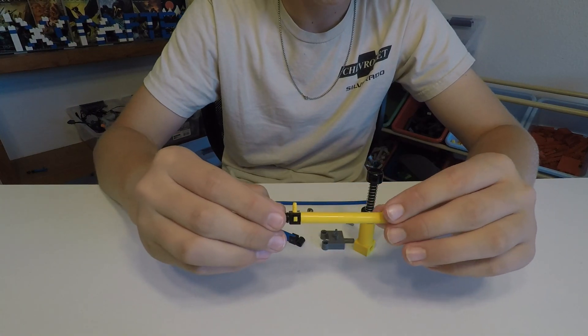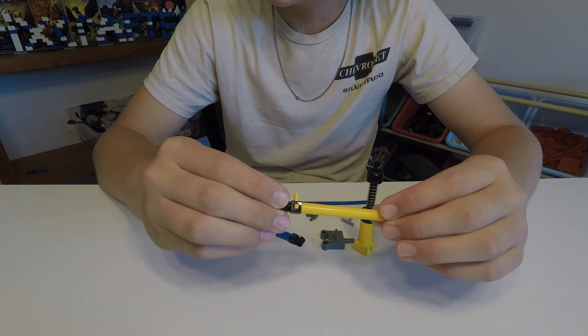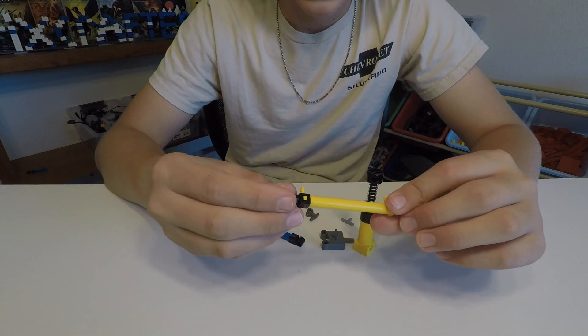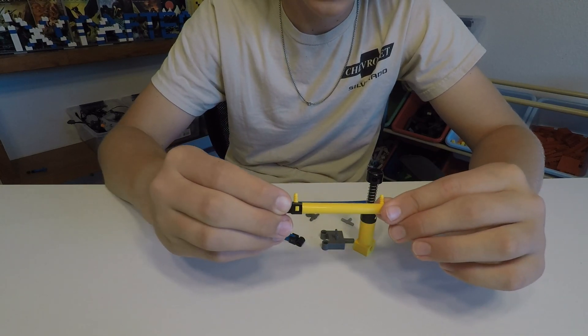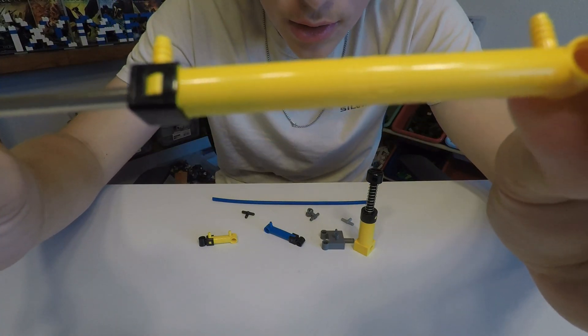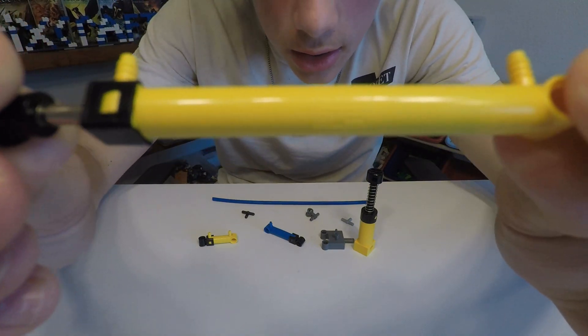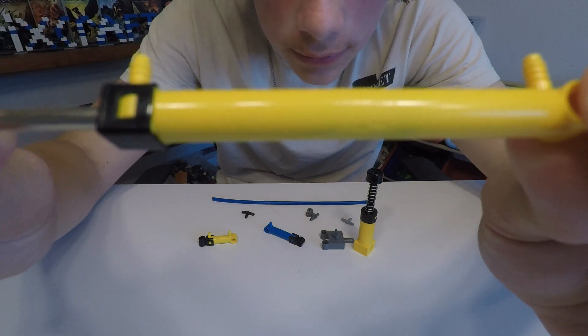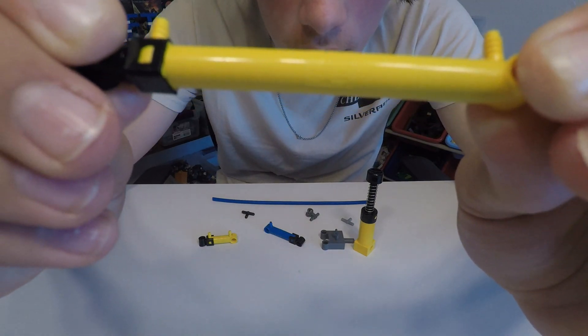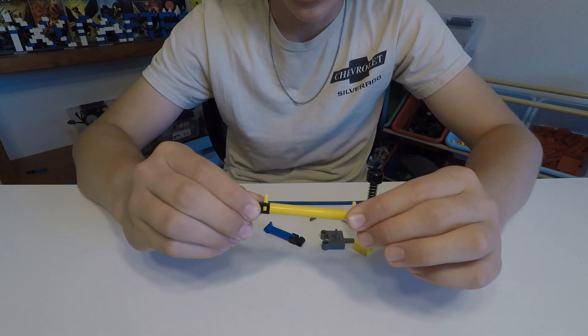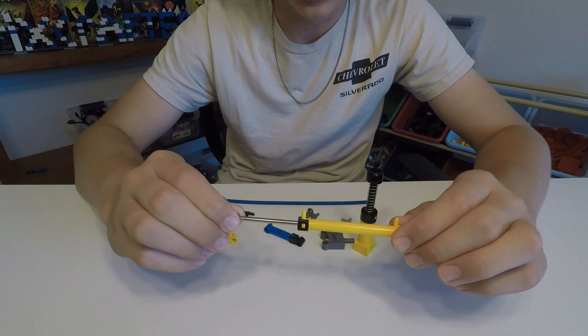This next one is just the same length, extends the same length, but it has a smaller chamber so you won't use as much air. And you can actually see the thing in the middle moving back and forth. So this one's good for less air but a long extension.